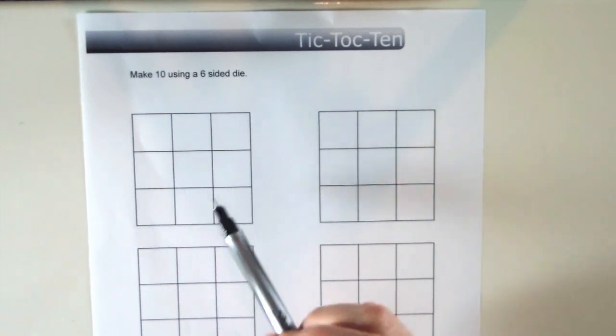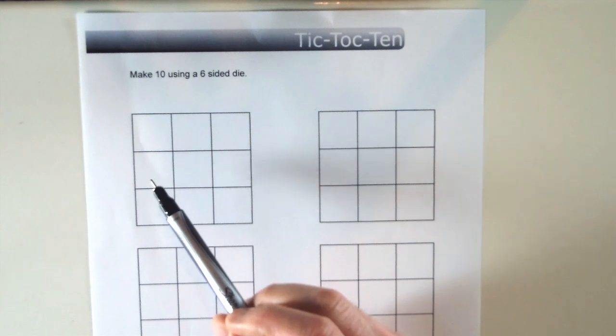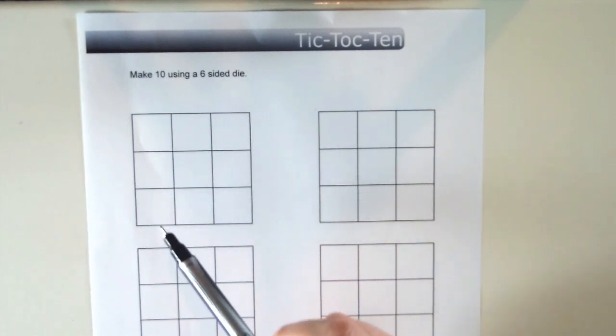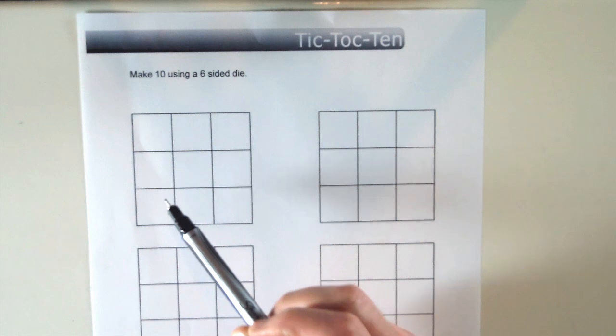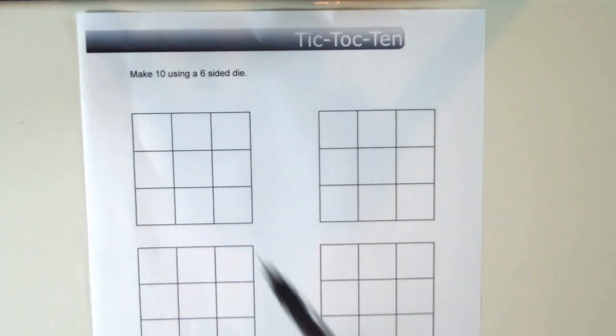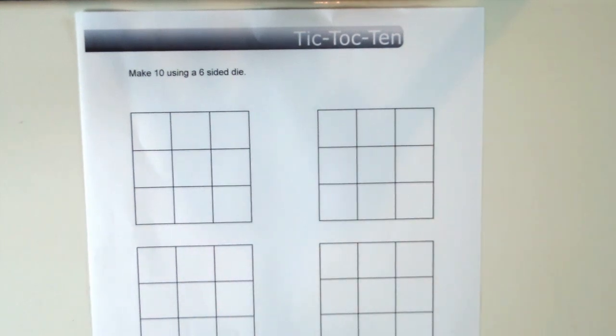Although the other player might put in other numbers in that combination, for you to win you have to be the player who puts in the final number. Now I'll use two different colored pens, black and red, to show you each player's different numbers.